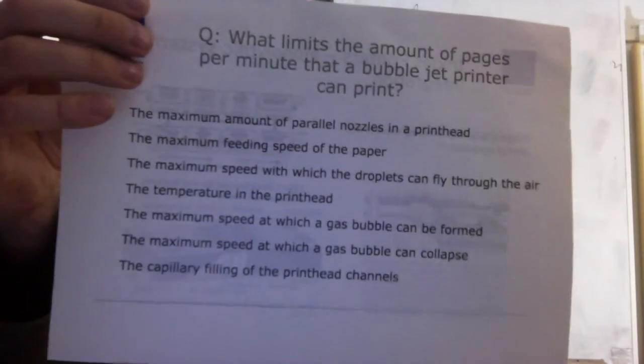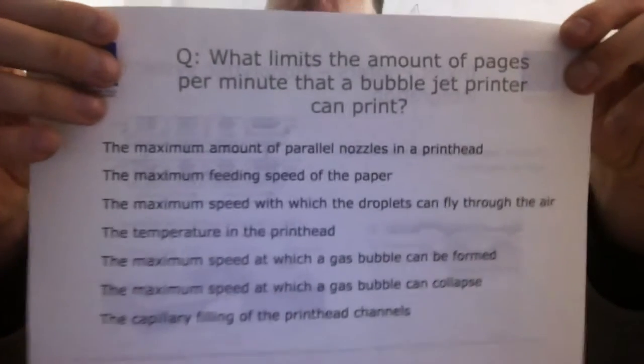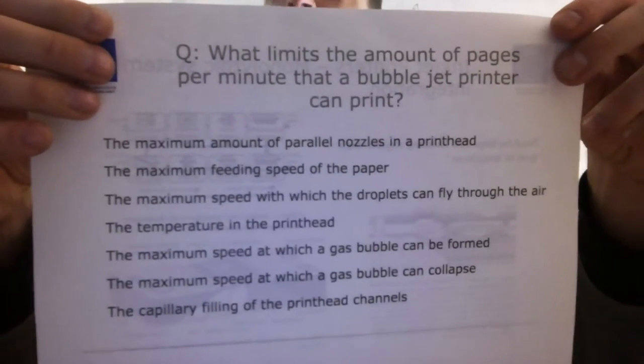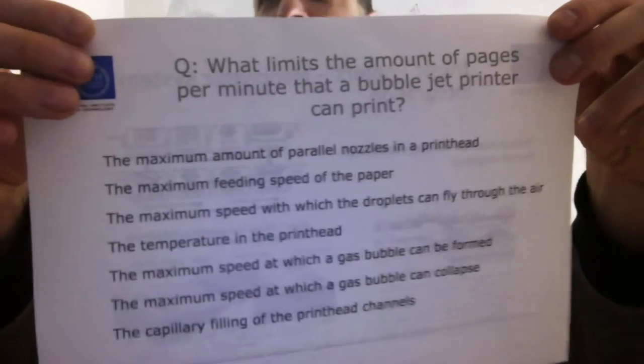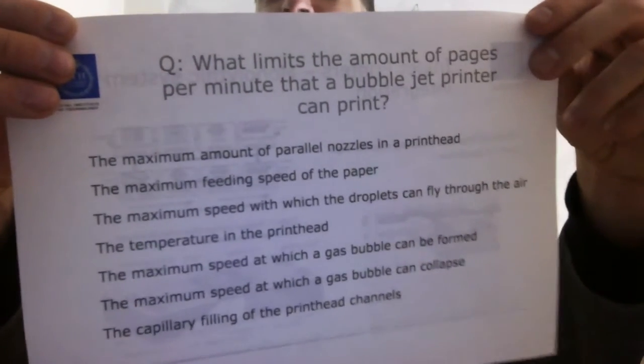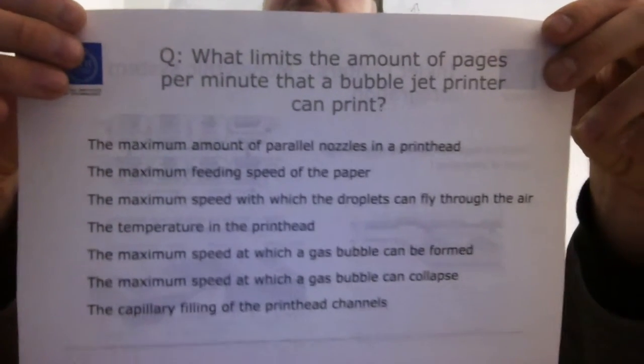So is it the maximum speed at which the droplets can fly through the air? No, not at all. That has nothing to do with it. In practice, the droplet speed is typically 10 meters per second. But even if it were 1 meter per second, it doesn't matter. As long as it's synchronized with the paper movement, it doesn't matter how fast they actually fly.